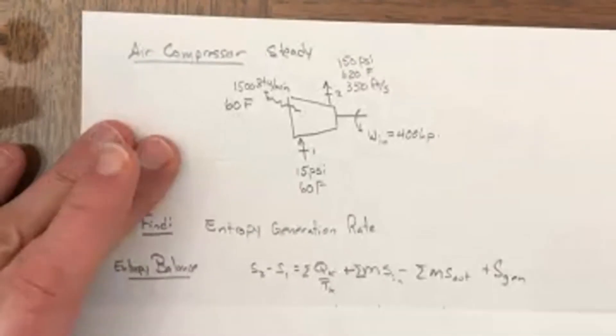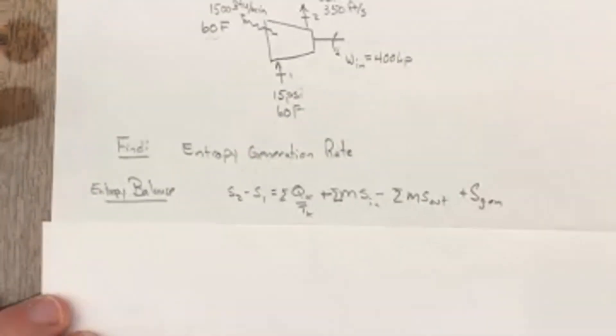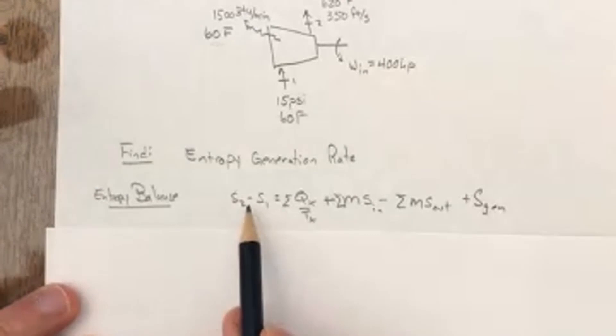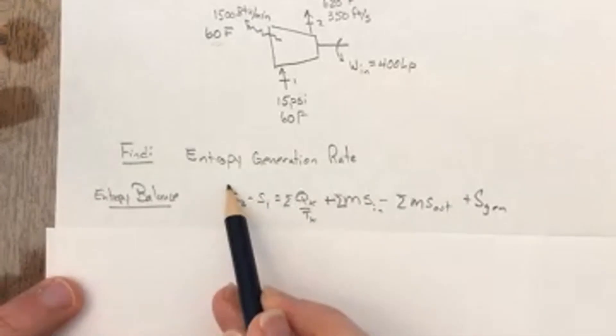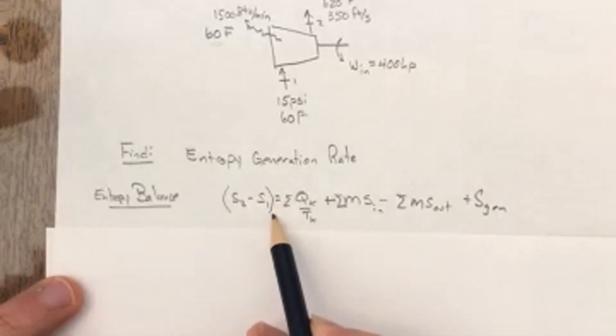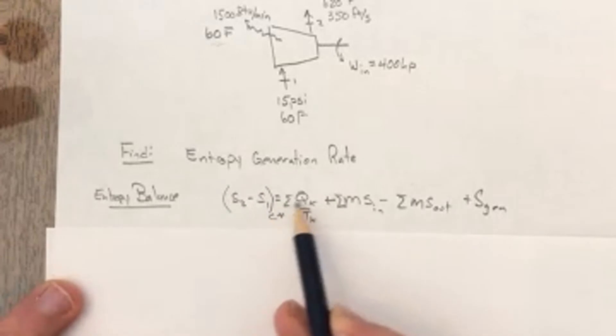Again, we can write the entropy balance equation. It would look like this, where S2 minus S1, the left-hand side, is the control volume of the system.